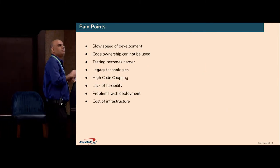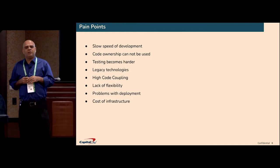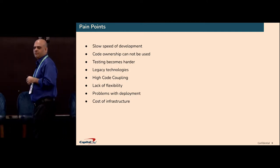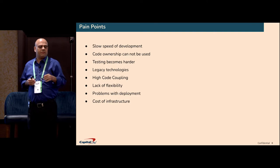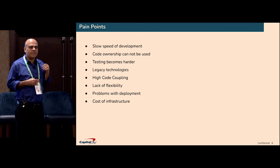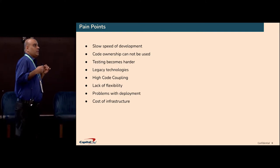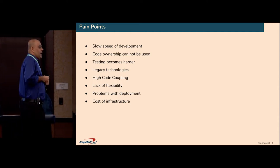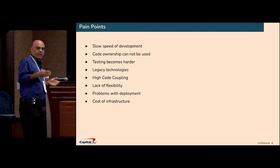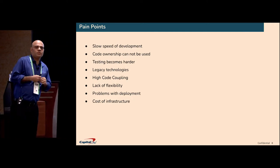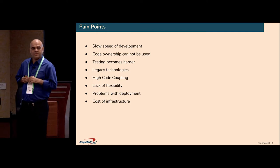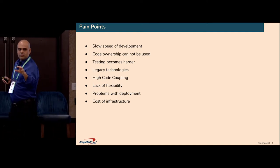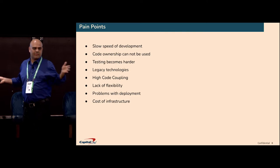We were suffering multiple pain points with this architecture. First, slow speed of development — imagine a developer creating a pull request and merging it; the whole code base needs to be built and deployed, and hundreds of JUnit test suites would be executed. If the build fails, you have to wait all over again. Code ownership was another issue — multiple teams working on the same code base, with products and features wanting to add new capabilities. One team's changes could affect other teams because there was no ownership; it was just one single code base.